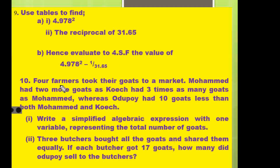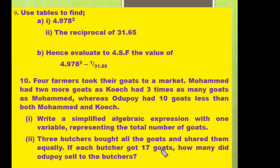Question number ten: four farmers took their goods to the market. Muhammad had two more goods than Kwech; Kwech had three times as many goods as Muhammad, whereas Odupoi had ten goods less than both Muhammad and Kwech combined. Part (i): write a simplified algebraic expression with one variable representing the total number of goods. Part (ii): three butchers bought all the goods and shared them equally — if each butcher got seventeen goods, how many did Odupoi sell to the butchers?